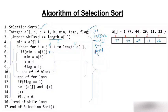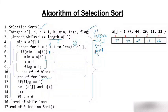We increment j to 3 and reset flag to 0. Is 3 less than 5? Yes. We set minimum = a[3] = 29. We start from i = j+1 = 4, going till 5. Is minimum (29) greater than a[4] (77)? No. We don't move inside. We increment i to 5. Is 29 greater than a[5] (44)? No. We come out of the for loop.